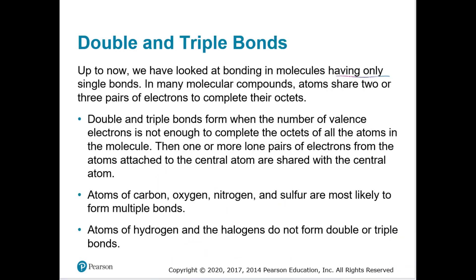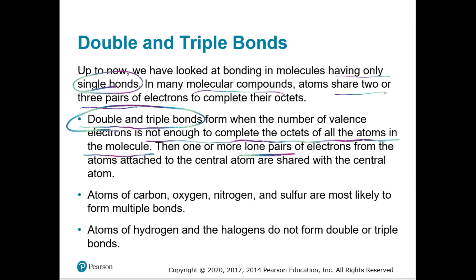Up to now, we've looked at bonding in molecules with only single bonds. In many molecular compounds, atoms share two or three pairs of electrons to complete their octets. Double and triple bonds form when the number of valence electrons is not enough to complete the octets of all atoms. Atoms of carbon, oxygen, nitrogen, and sulfur are most likely to form multiple bonds.